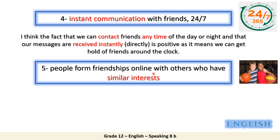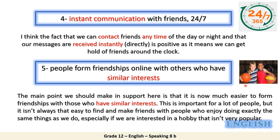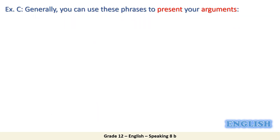For number five: people form friendships online with others who have similar interests. The main point to make in support here is that it is now much easier to form friendships with those who have similar interests. This is important for many people, but it isn't always easy to find and make friends with people who enjoy doing exactly the same things as you do — especially if you are interested in a hobby that isn't very popular.